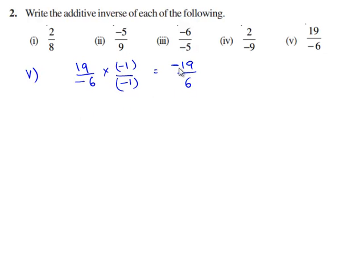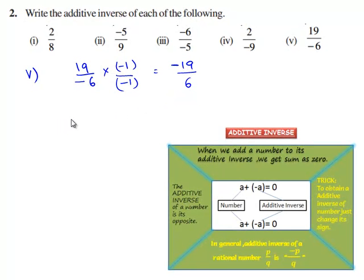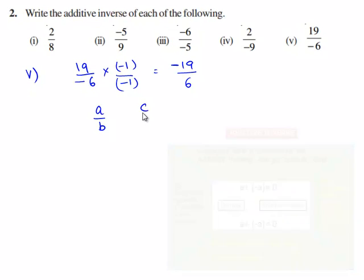Now we have to find the additive inverse of minus 19 by 6. For every rational number a by b there exists another rational number c by d such that a by b plus c by d is equal to 0 which is equal to c by d plus a by b. Therefore c by d is the additive inverse of a by b and a by b is the additive inverse of c by d.